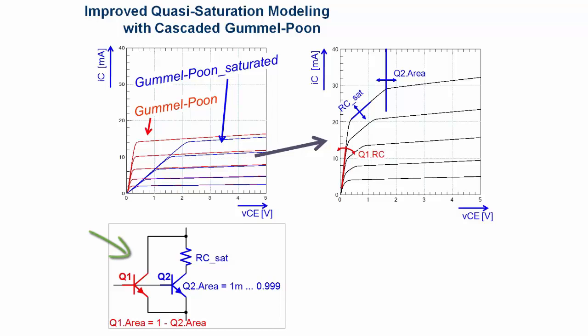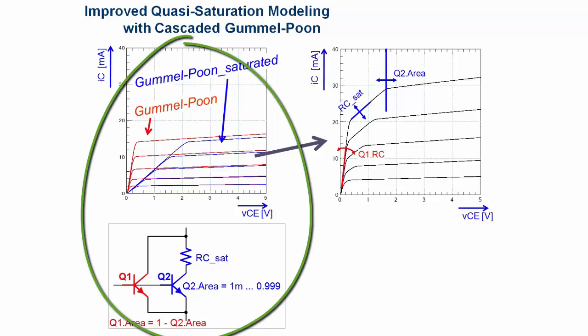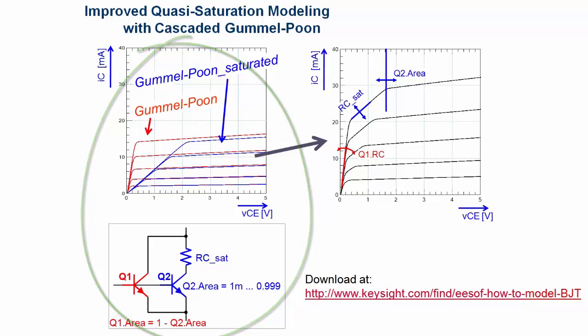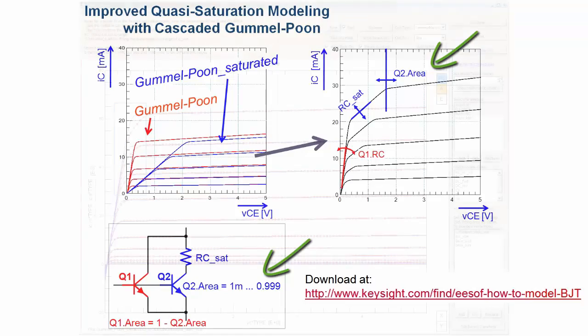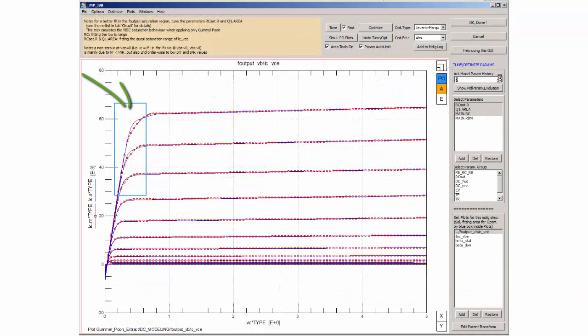We know from passive components modeling that the fitting of a model can be improved when we cascade the model, and this is what we will apply now also here. Let's think of the quasi-saturation range as an overlay of two Gummel-Poon output characteristics. One instance of the model, shown in red, is the original model, while the other one is an instance of the same model, but with an additional big external collector resistance which I call RC-SAT, which brings this model instance into saturation. The overlay of both instances, shown on the right, is weighted by the instance parameter area. And here comes the fitting result.